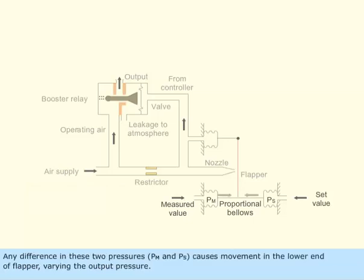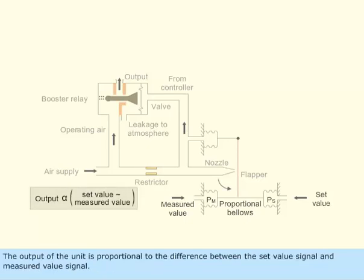Any difference in these two pressures, Pm and Ps, causes movement in the lower end of flapper varying the output pressure. The output of the unit is proportional to the difference between the set value signal and measured value signal.